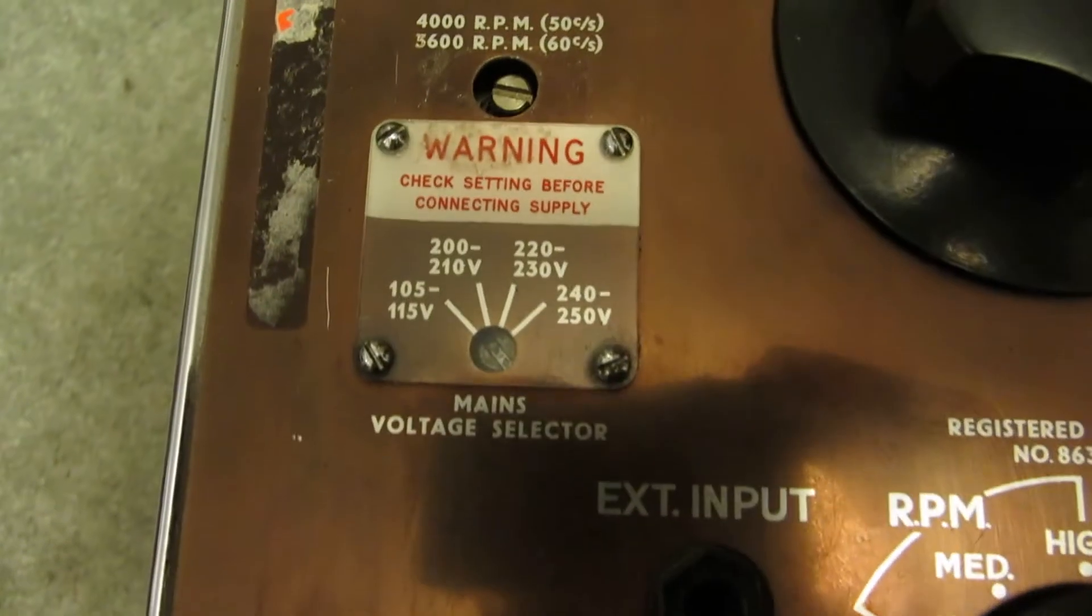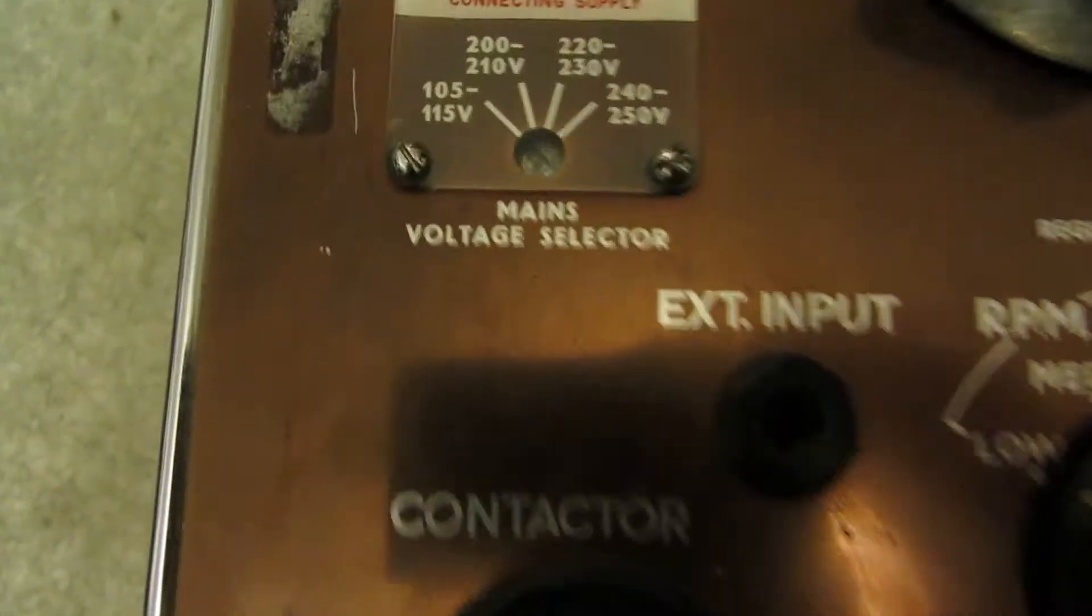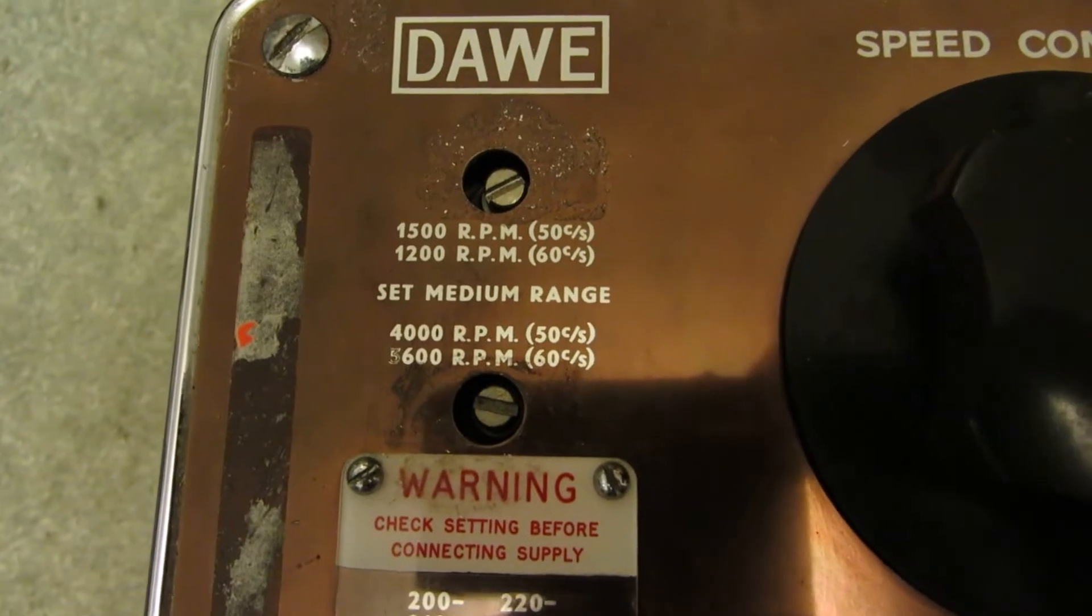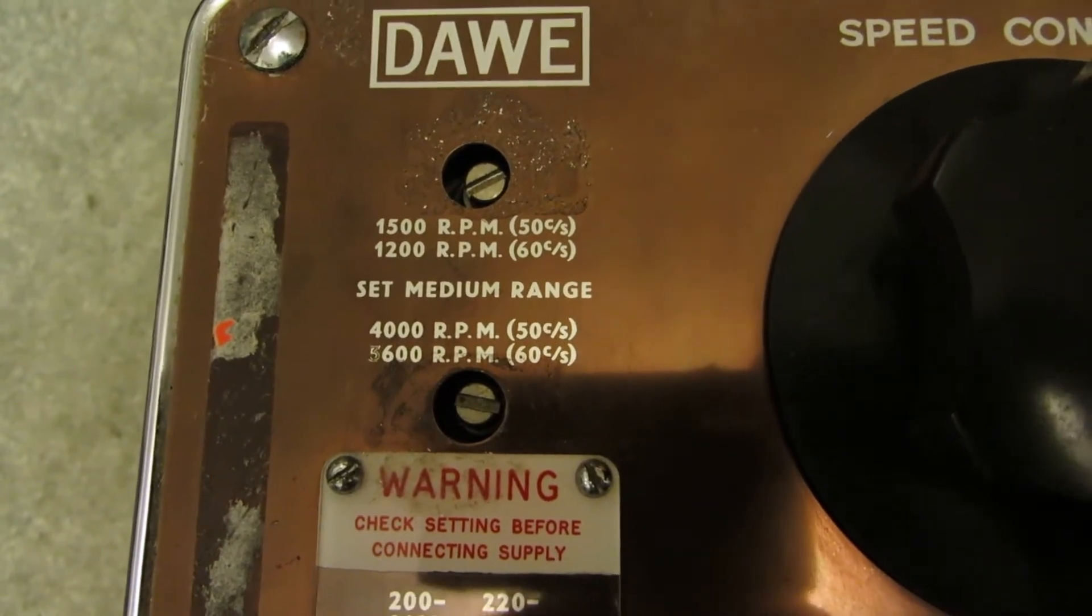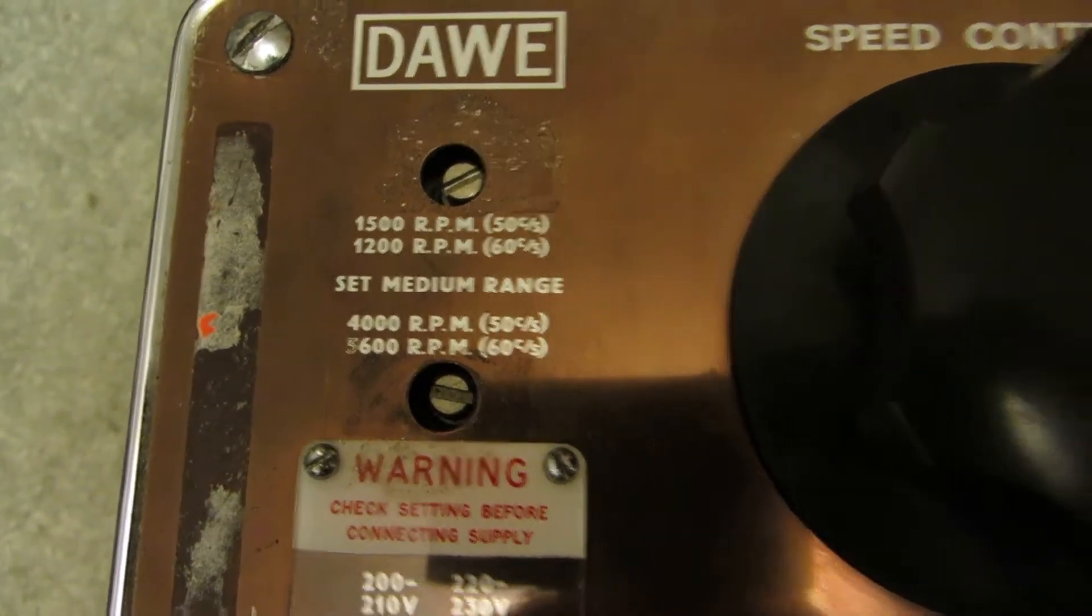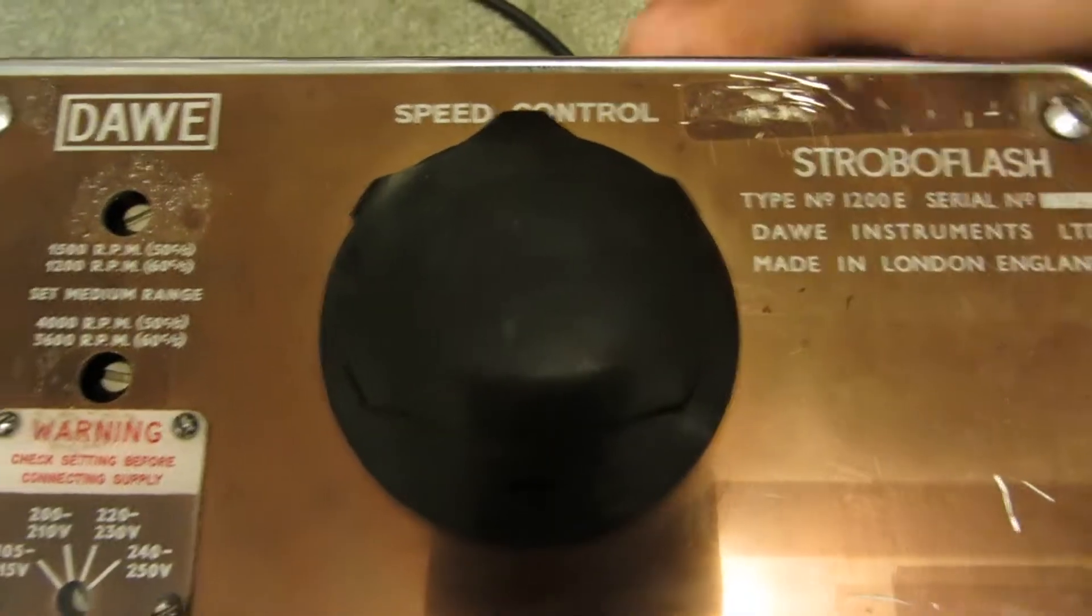Over here you've got your mains voltage selector and your two calibration set screws. Up here is your main speed control.